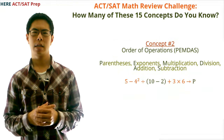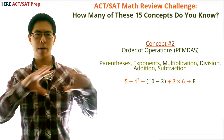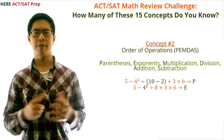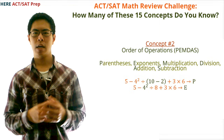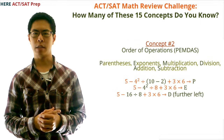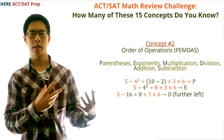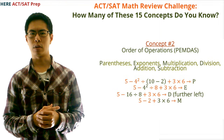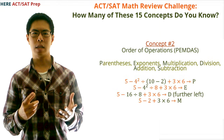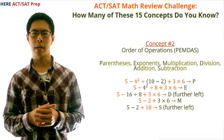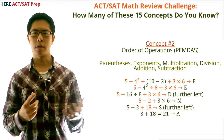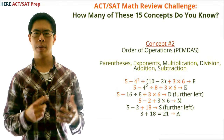Here's an example of how to apply PEMDAS. In the expression 5 − 4² ÷ (10 − 2) + 3 × 6, we first do the parentheses: 10 − 2 = 8, giving us 5 − 4² ÷ 8 + 3 × 6. Next the exponent: 4² = 16, giving 5 − 16 ÷ 8 + 3 × 6. Then division (further left): 16 ÷ 8 = 2, giving 5 − 2 + 3 × 6. Then multiplication: 3 × 6 = 18, giving 5 − 2 + 18. Then subtraction (further left): 5 − 2 = 3, giving 3 + 18. Finally addition: 3 + 18 = 21.